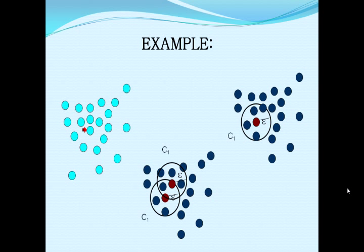Here is an example applied on a group of points. First, selecting a particular point — with the help of epsilon distance and min points, it forms a cluster. Here it is density-reachable. You can see two circles: one point is a core point and it is density-reachable. All of these belong to one cluster.